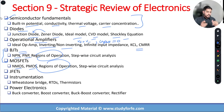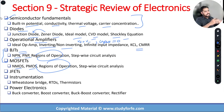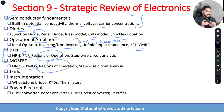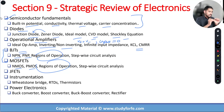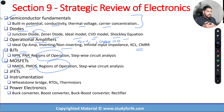The base current IB is very low for BJTs. In MOSFETs, the gate current is always equal to zero. We can exploit these facts in circuit analysis, as seen throughout the course while doing practice problems.